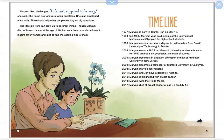Timeline. 1977, Maryam was born in Tehran, Iran on May 12th. 1994 and 1995, Maryam wins gold medals at the International Mathematical Olympiad for high school students. 1999, Maryam earns a bachelor's degree in mathematics from Sharif University of Technology in Tehran.